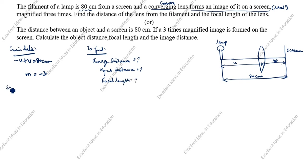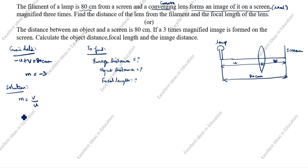Now we will solve this problem. The magnification formula for a lens is m equals V by U. We know m equals minus 3, so: minus 3 equals V by U, which gives us minus 3U equals V.